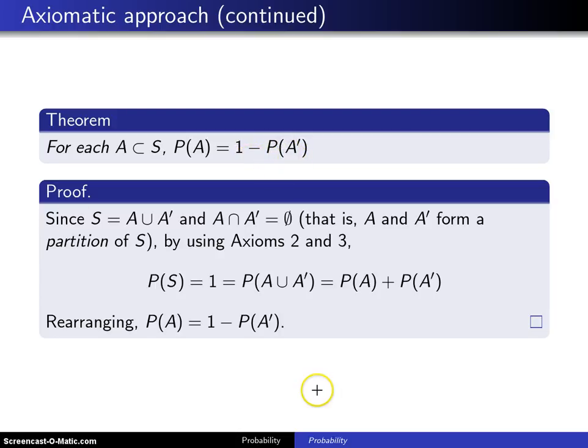Now in order to do the proof of this result, a Venn diagram is going to be helpful, so I will go ahead and draw one down here. Here is the event A, and of course the box is the sample space S.